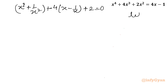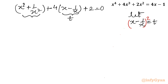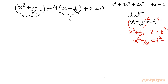Now I introduce the substitution: let t equals x minus 1 over x. Then I need x² plus 1/x². Squaring both sides of the substitution gives x² plus 1/x² minus 2 equals t², so x² plus 1/x² equals t² plus 2.